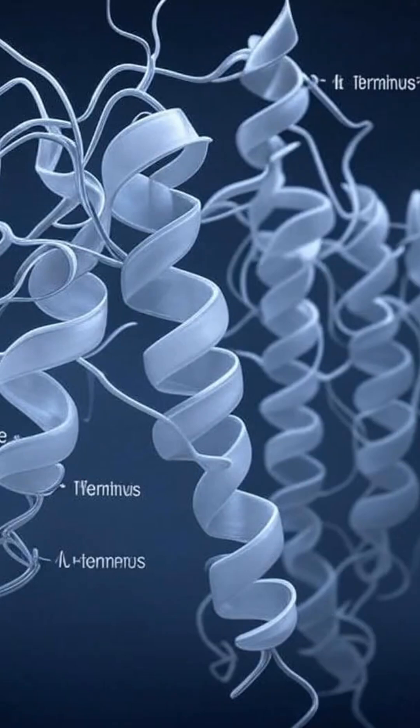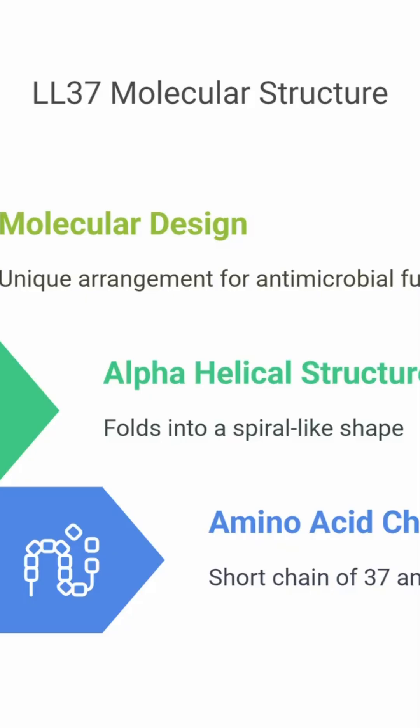A lot of it comes down to its design, its molecular structure. It's a relatively short chain, 37 amino acids that folds up into what we call an alpha helical structure. Like a spiral? Sort of like a coiled spring, yeah.